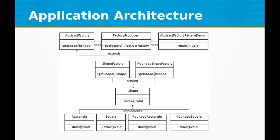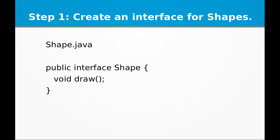At a higher level, we can look at the application architecture. We will have an AbstractFactory class which is used by the FactoryProducer and our AbstractFactoryPatternDemo. The AbstractFactory class is extended by ShapeFactory and RoundedShapeFactory. These interact with the Shape interface, which is implemented by the Rectangle, Square, RoundedRectangle, and RoundedSquare classes.